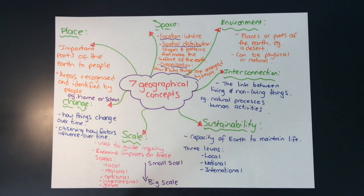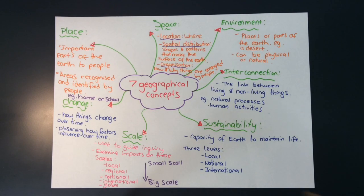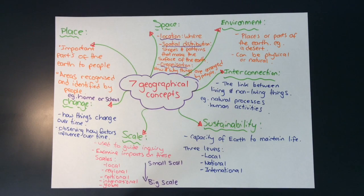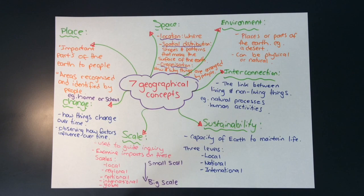Let's summarize these main points. We've got seven geographical concepts, each of them very important to understand for your studies in geography. They are place, space, environment, interconnection, sustainability, scale, and change. Thanks for watching this video — make sure you subscribe to my channel, like it, and add comments.